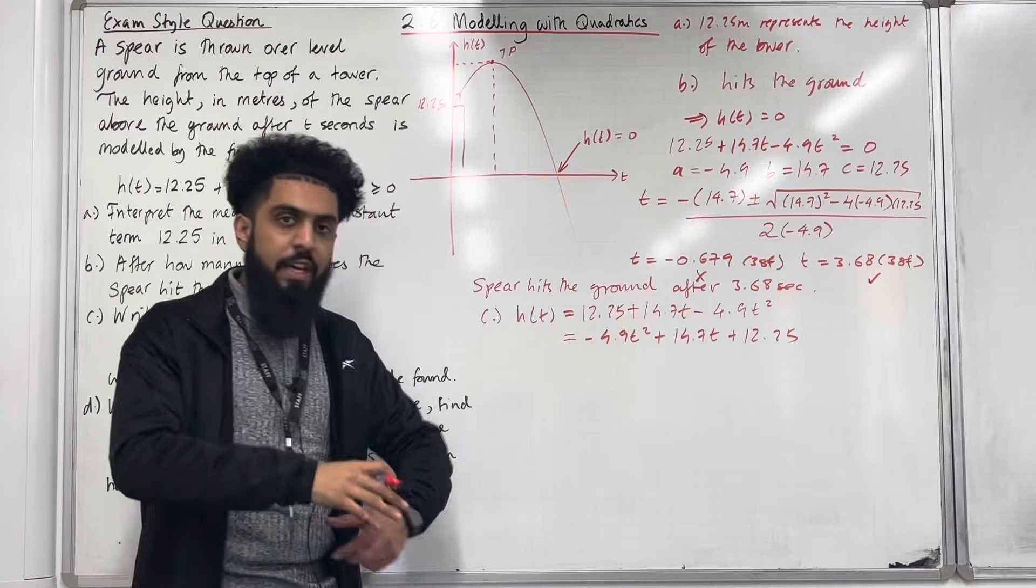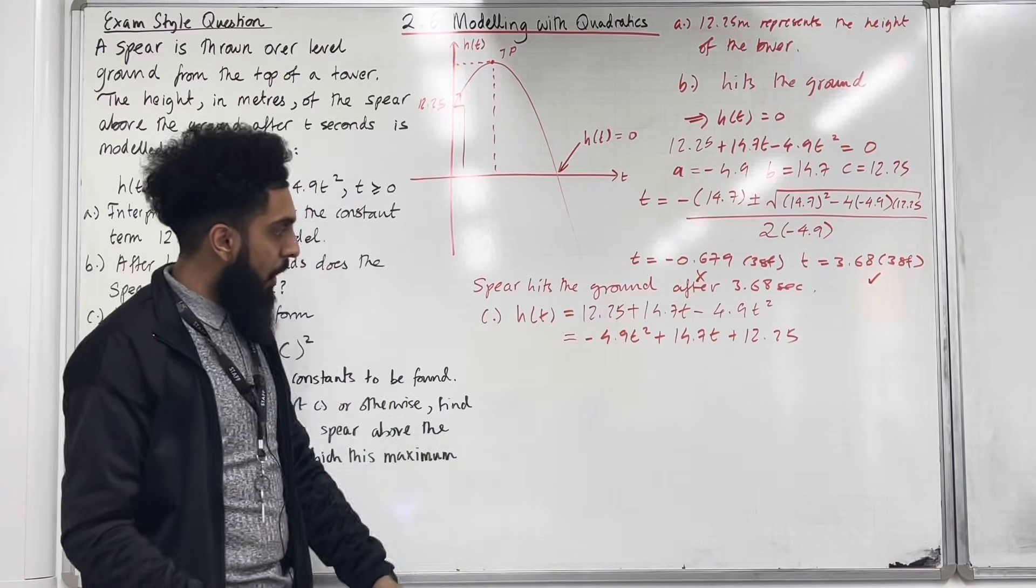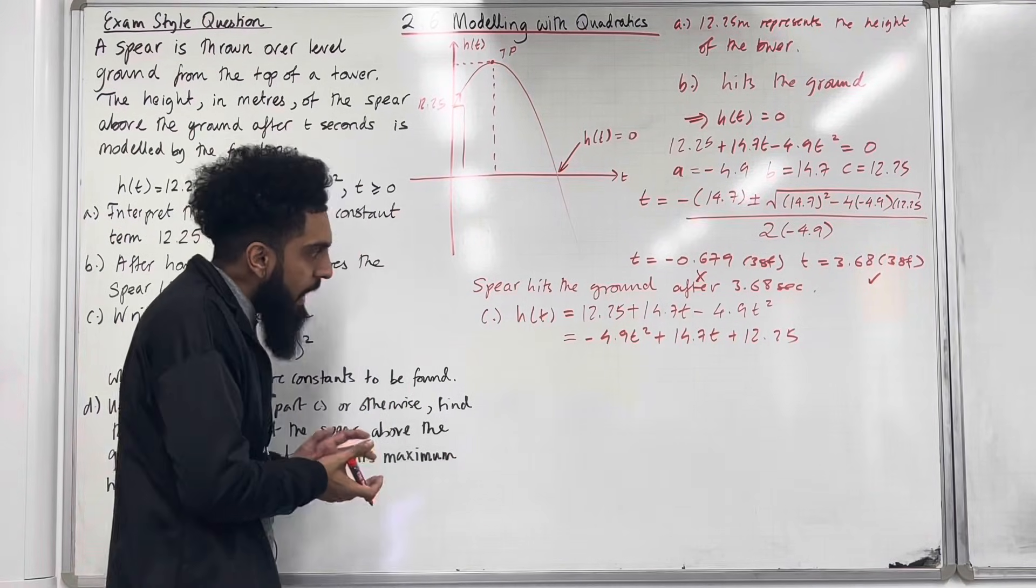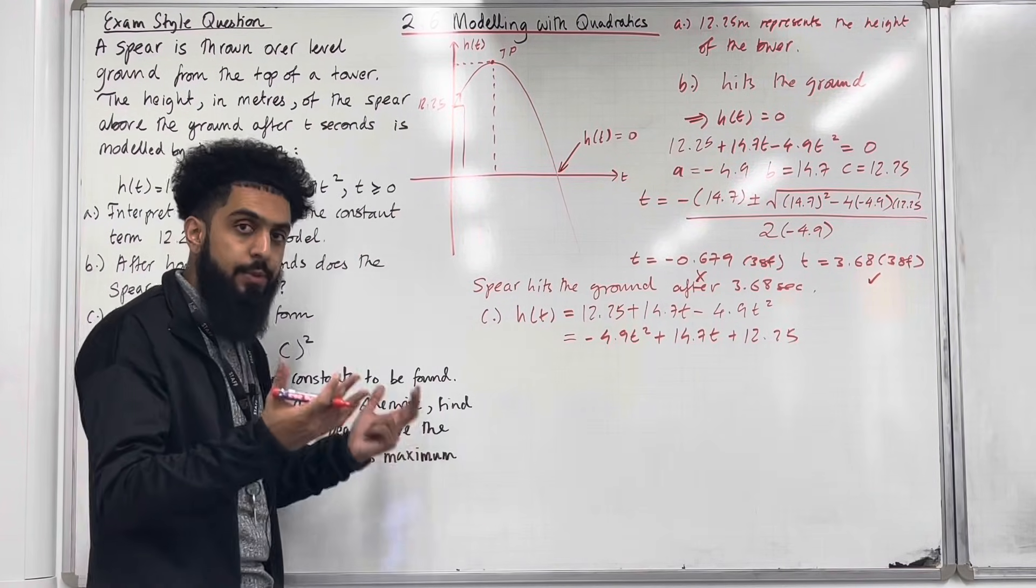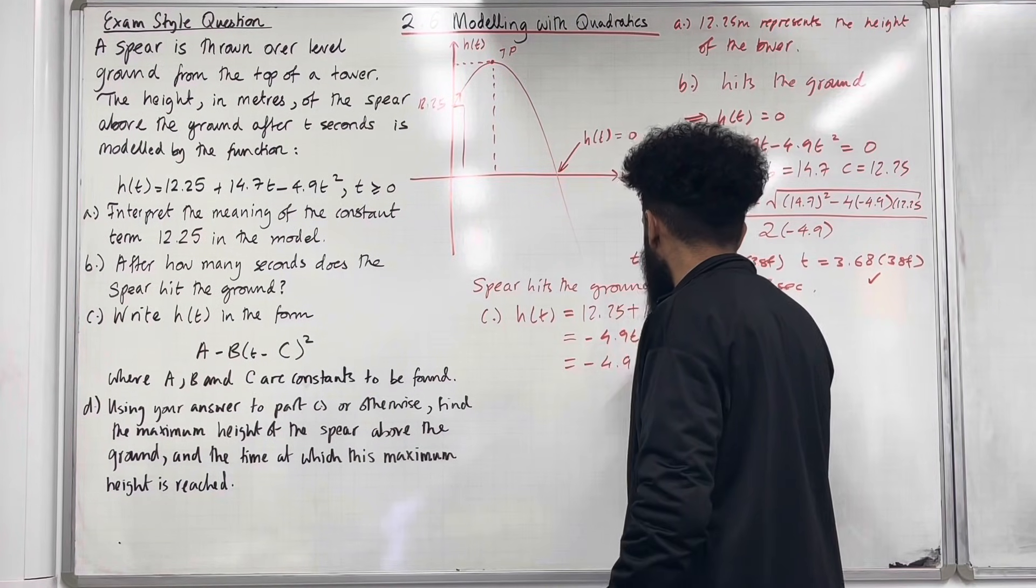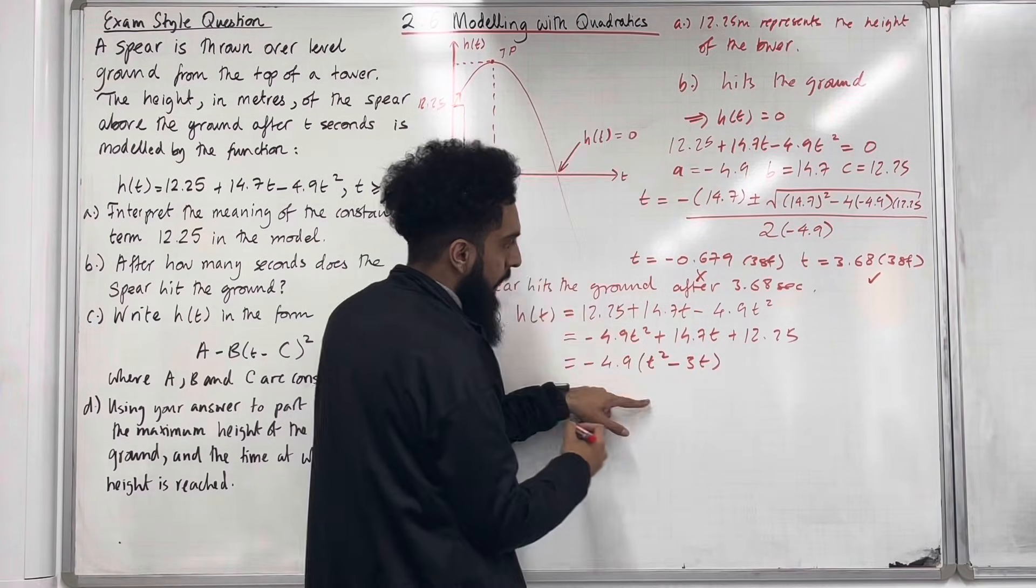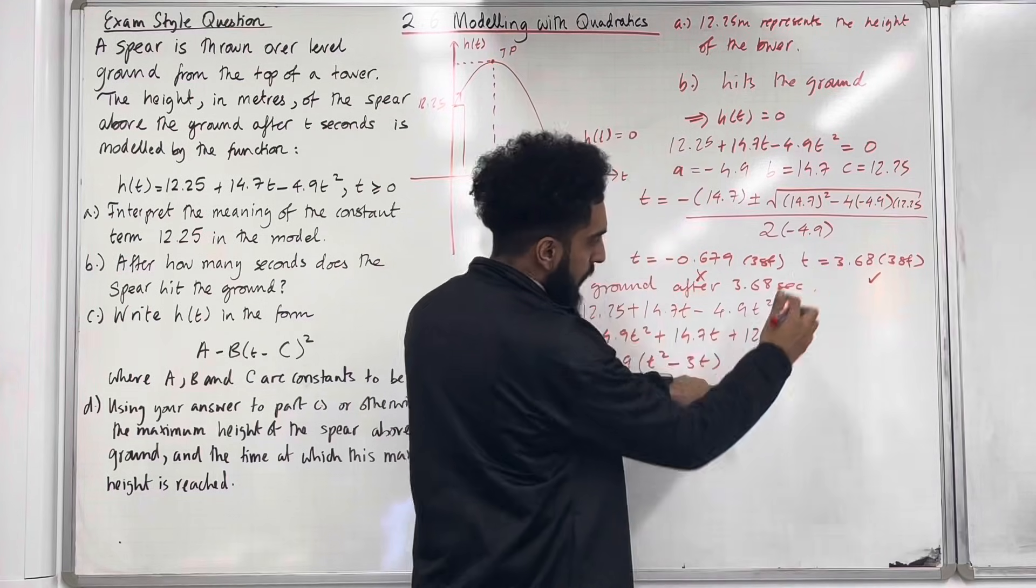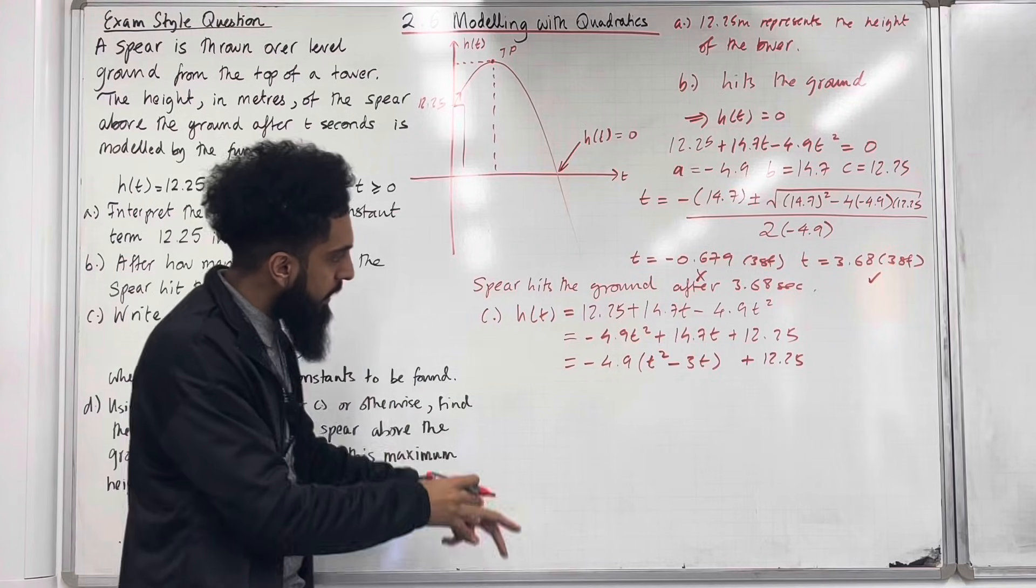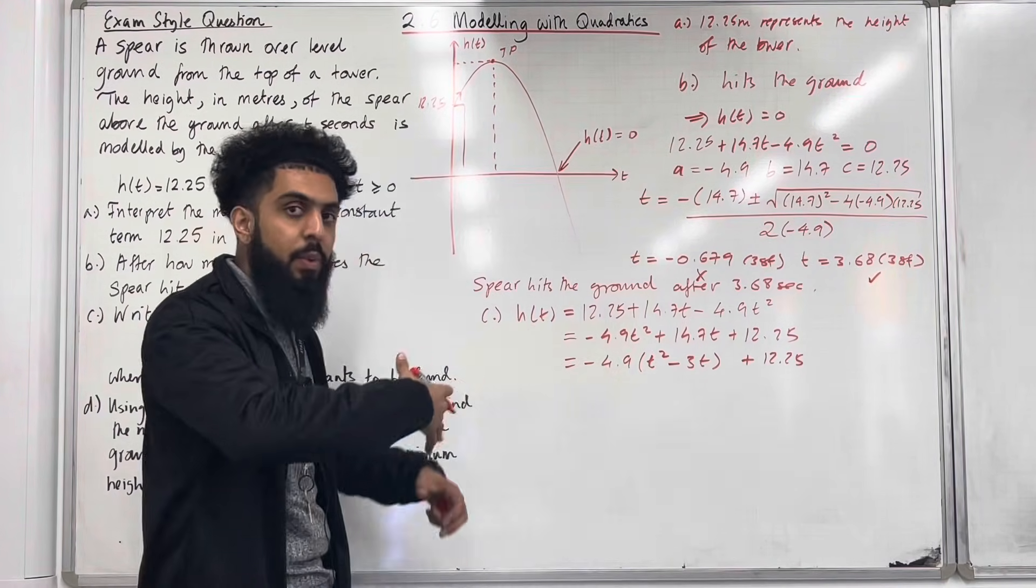You can only complete the square if the coefficient of your squared term, so the t² term, is 1. Over here it is minus 4.9. So the very first step is to take out a factor of minus 4.9 before we complete the square. So we take out a factor of minus 4.9. In bracket so we have got t² - 3t, close bracket plus we have got the 12.25 on the outside. So now if you look at what we have inside the bracket which is t² - 3t, the coefficient of t² is 1. So we can now complete the square.